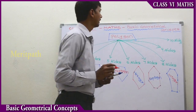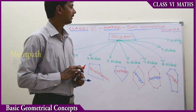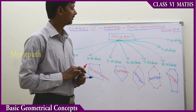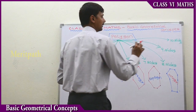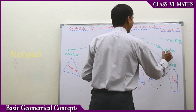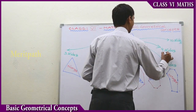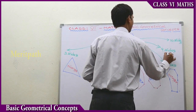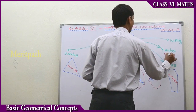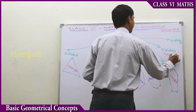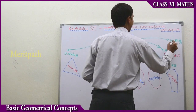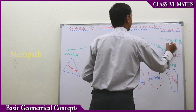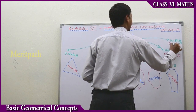Similarly, a simple closed figure bounded by nine line segments we call a nonagon, and ten sides we call a decagon.